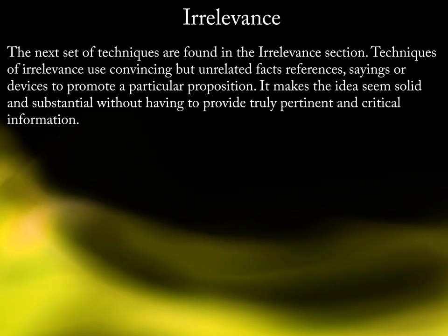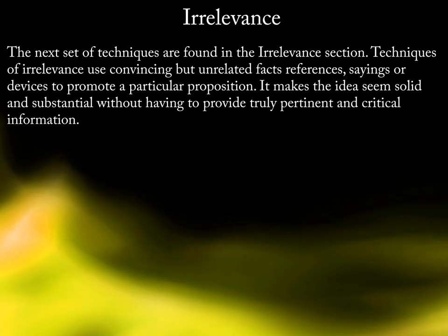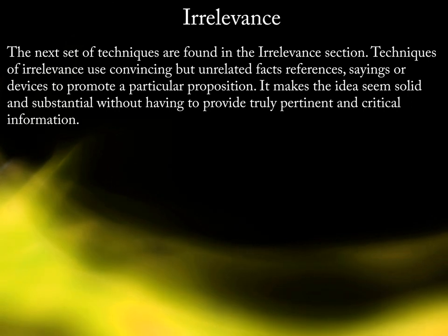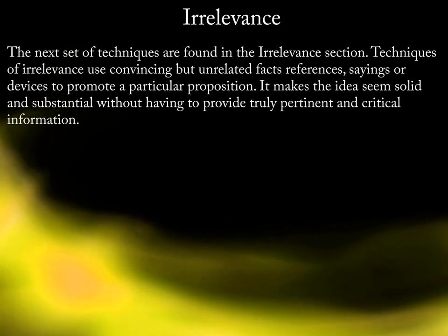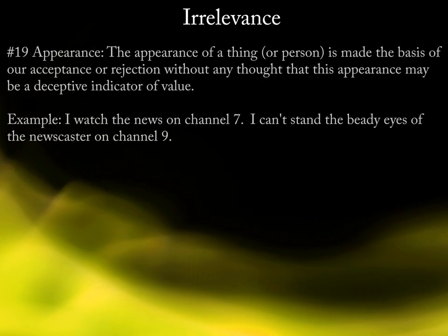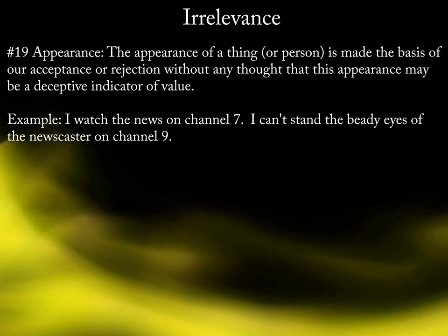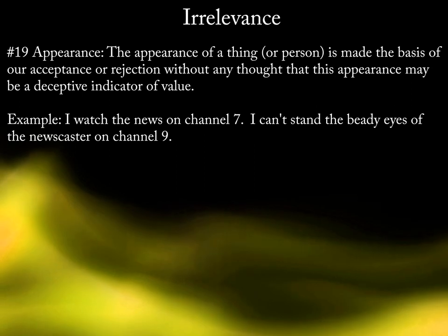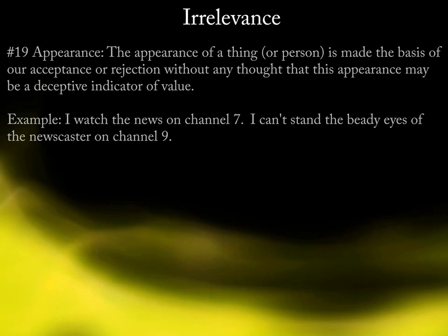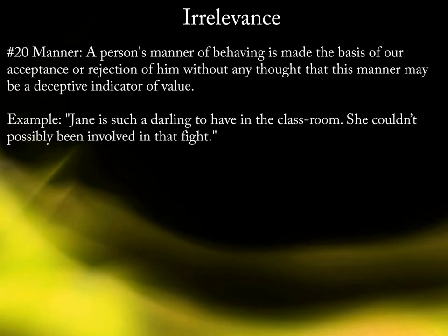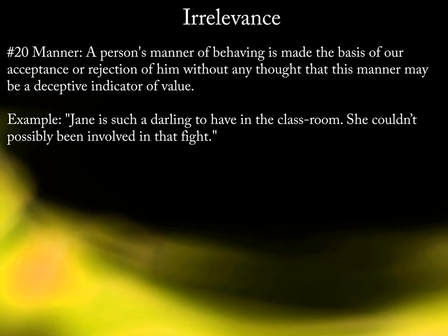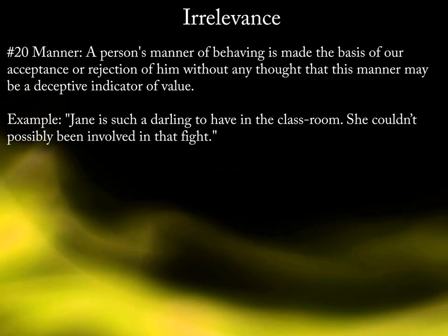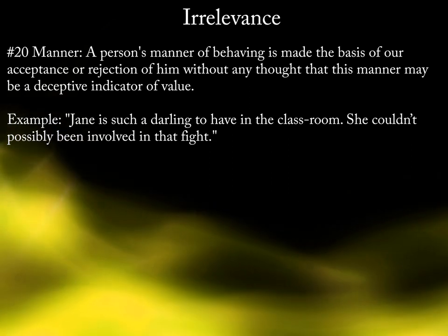The next set of techniques are found in the Irrelevance section. Techniques of irrelevance use convincing but unrelated facts, references, sayings, or devices to promote a particular proposition. It makes the idea seem solid and substantial without having to provide truly pertinent and critical information. 19. Appearance. The appearance of a thing or person is made the basis of our acceptance or rejection without any thought that this appearance may be a deceptive indicator of value. Example: "I watched the news on Channel 7. I can't stand the beady eyes of the newscaster on Channel 9." 20. Manner. A person's manner of behaving is made the basis of our acceptance or rejection without any thought that this manner may be a deceptive indicator of value. Example: "Jane is such a darling to have in the classroom — she couldn't have possibly been involved in that fight."